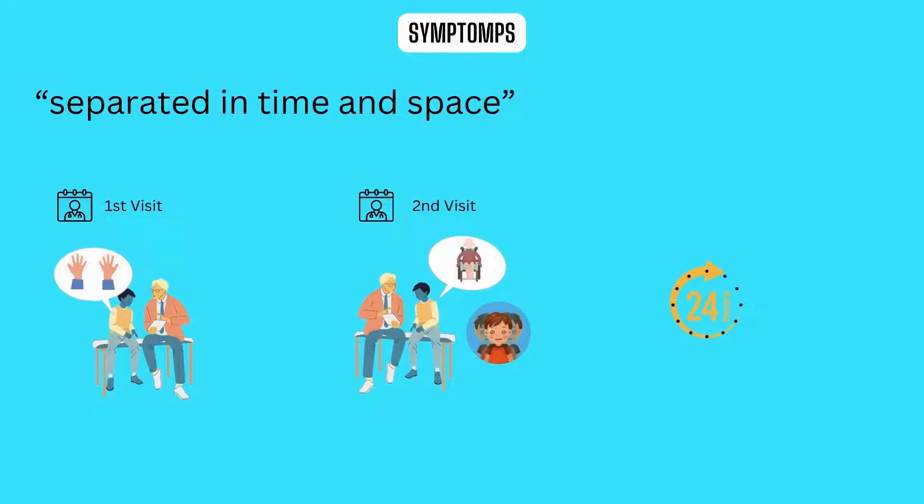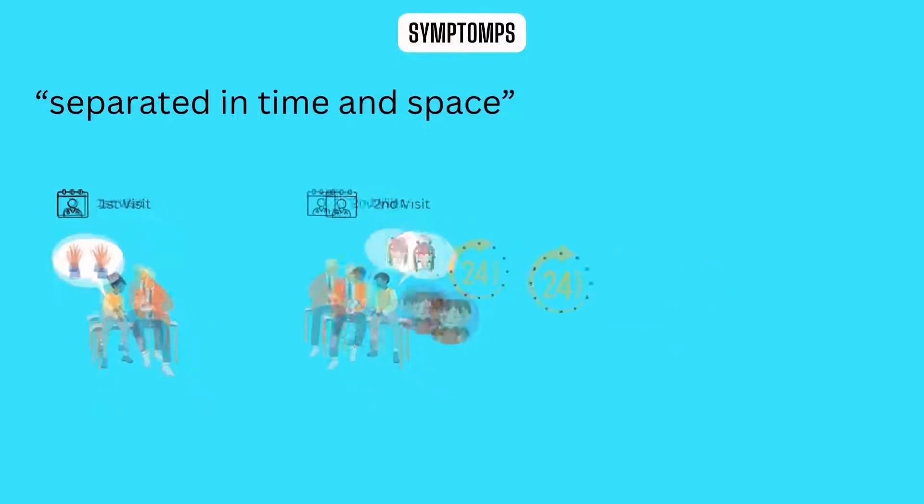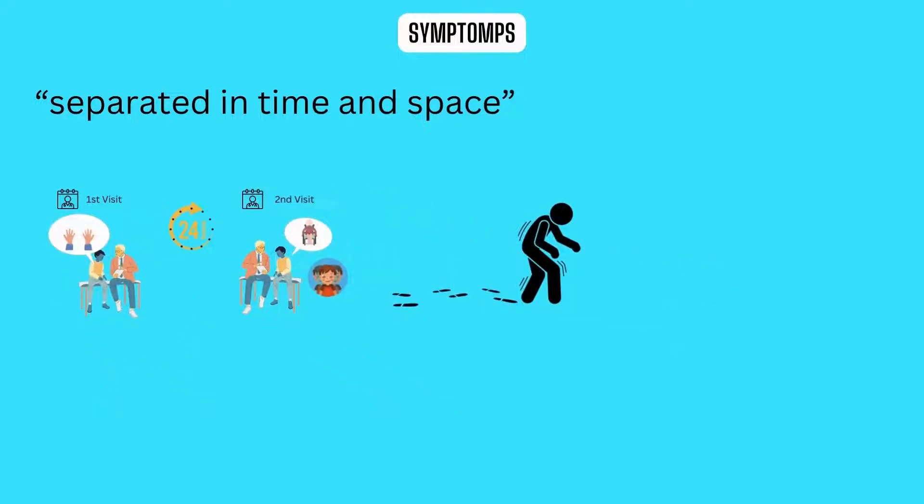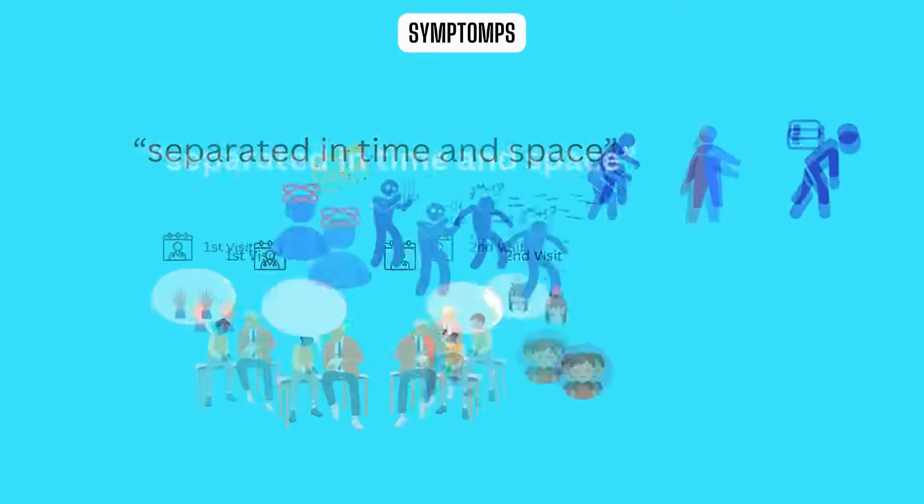MS symptoms may differ amongst persons. Some individuals come with prominent ataxia, hemiparesis or paraparesis, depression, or visual symptoms, whereas others have optic neuritis, fatigue, and essential tremors.